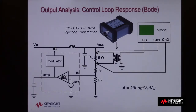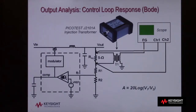To inject an error signal, a small resistor must be inserted into the feedback loop. For our experiment, we'll be using a 5-ohm injection resistor, which is insignificant in comparison to the series impedance of R1 and R2. We will also need to use an injection transformer so that the AC disturbance signal is isolated or floating and doesn't induce any DC bias.